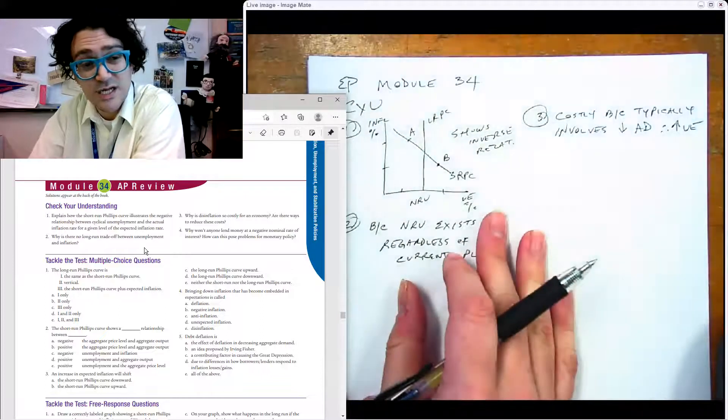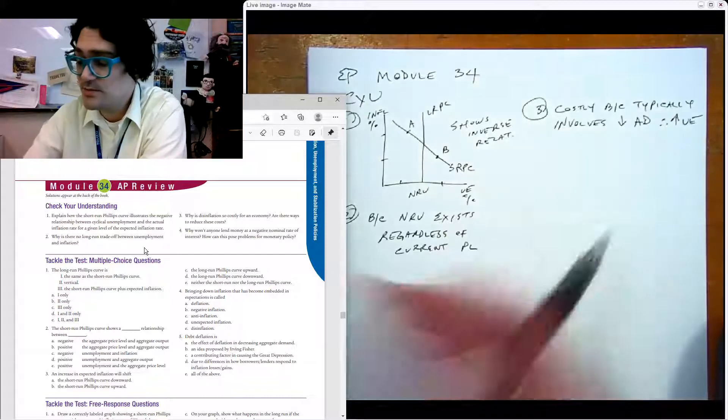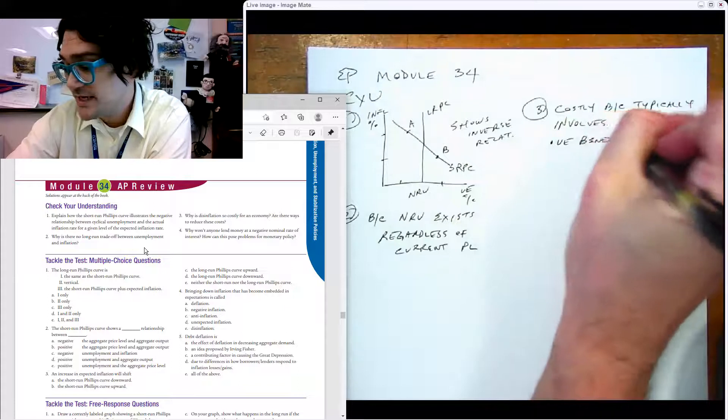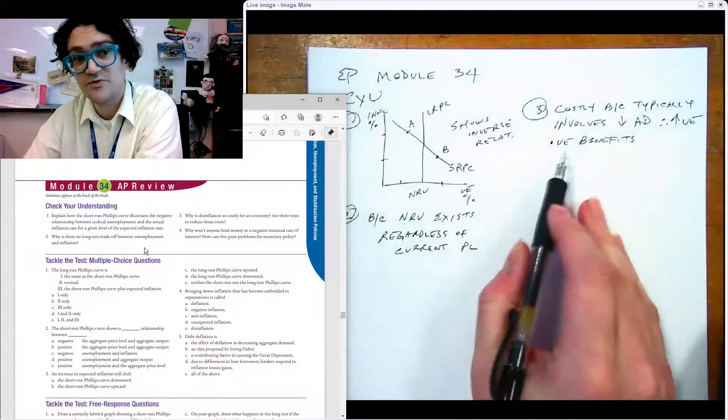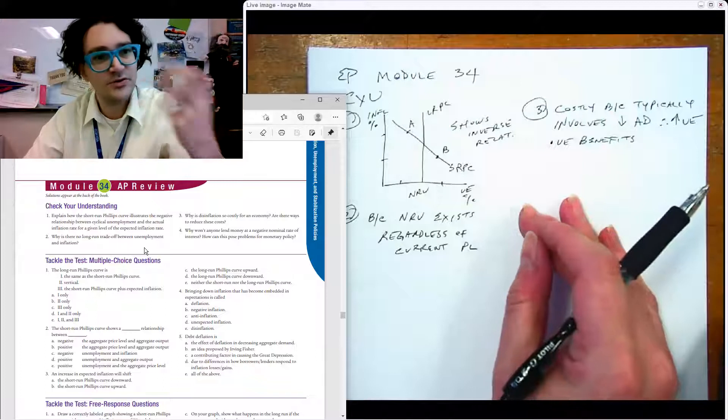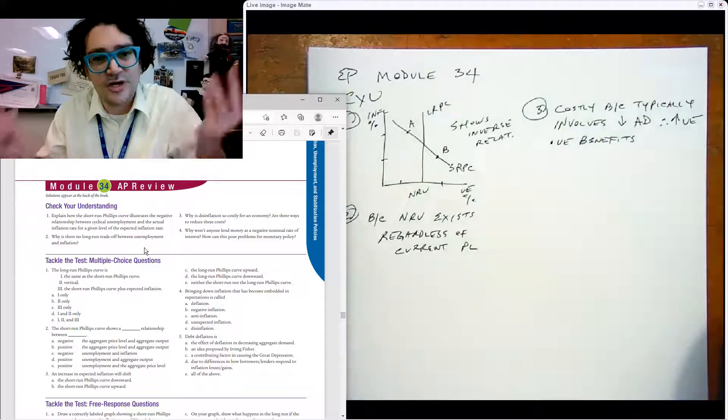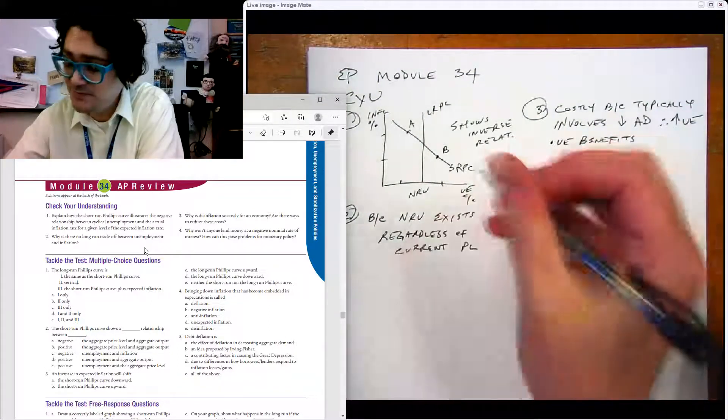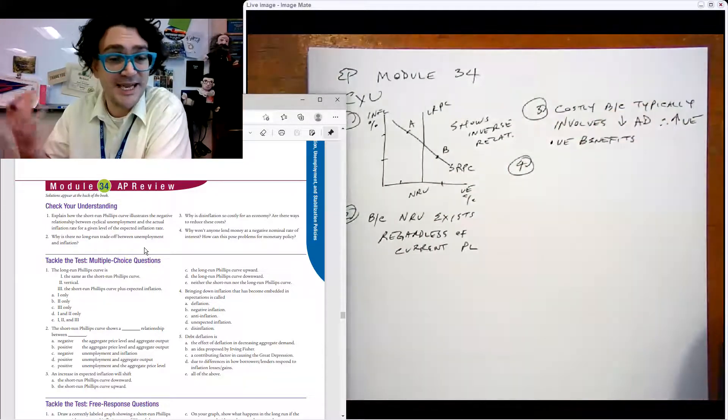Are there ways to reduce the costs? You can do it around the edges in the sense of like you could provide unemployment benefits. But the problem is actually anything that you do to try to help this is actually going to prevent you from disinflating. If you're trying to stimulate the economy at the same time you're contracting it, it's counterproductive. At the end of the game, disinflation is really painful.